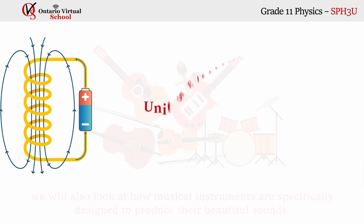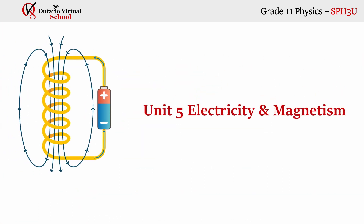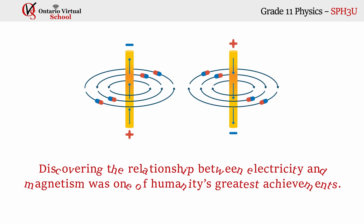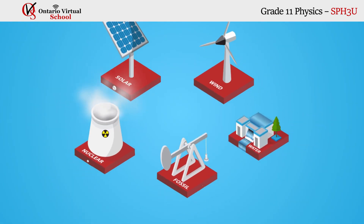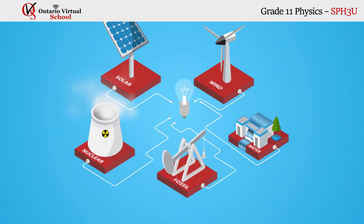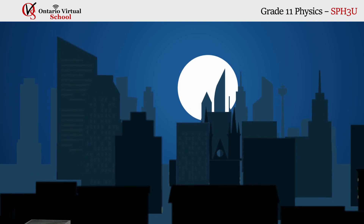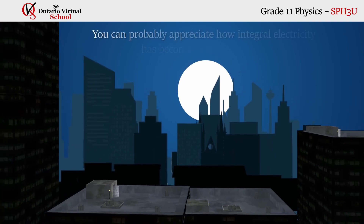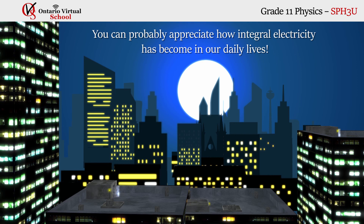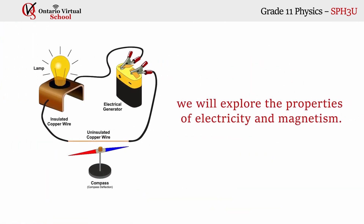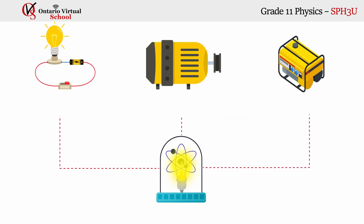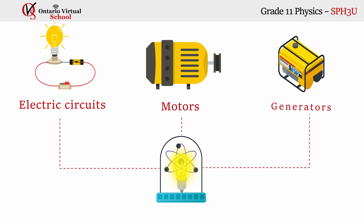Unit five: electricity and magnetism. Discovering the relationship between electricity and magnetism was one of humanity's greatest achievements. That discovery allowed us to generate electricity, and if you've ever experienced a blackout, you can appreciate how integral electricity has become in our daily lives. In this unit, we will explore the properties of electricity and magnetism, and investigate electric circuits, motors, and generators using diagrams and interactive labs.